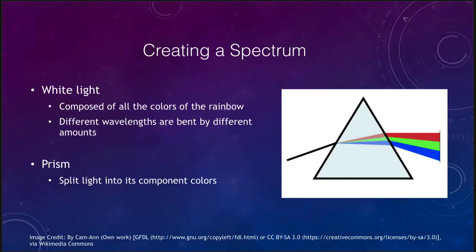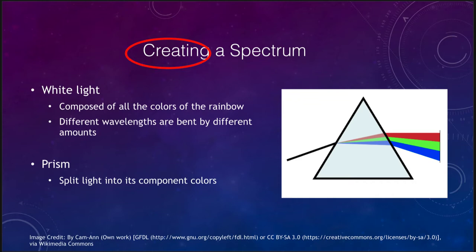So let's look at how we create a spectrum in the first place. It is created by taking white light, which is composed of all of the colors of the rainbow, and sending it through an object like a prism or a diffraction grating that astronomers use, which splits the light into its component colors.